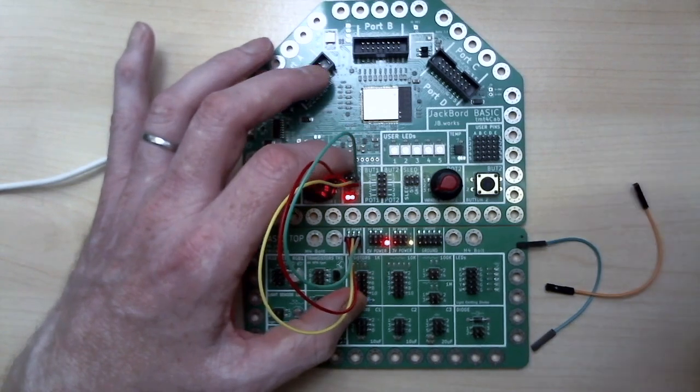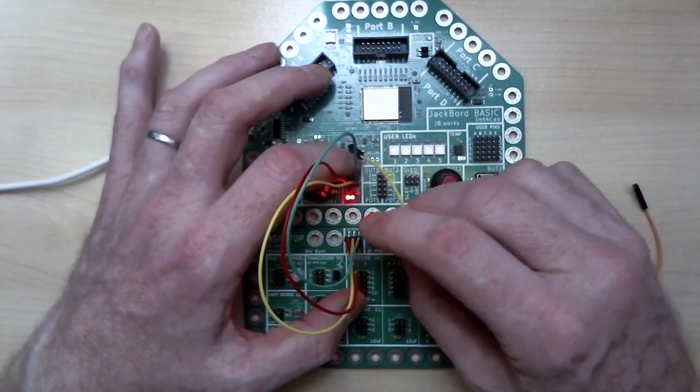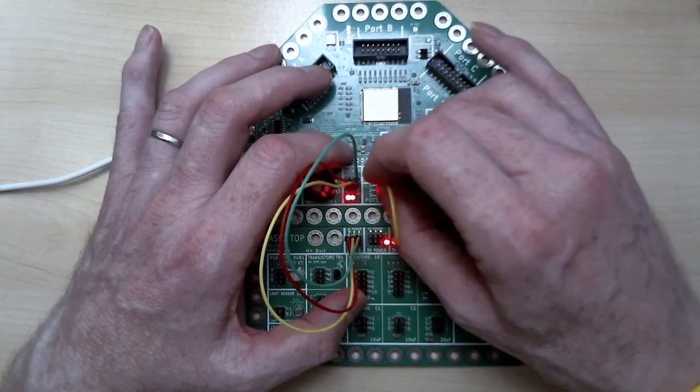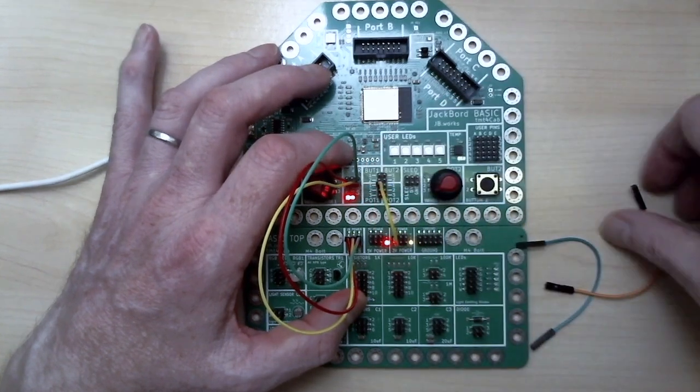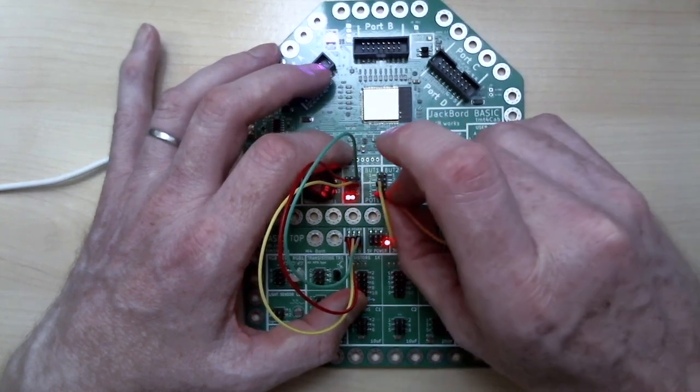So the first thing we need to do is get some power going from three volts to pin one of pot one that's this one here and then we're going to go from pin two of pot one to the red LED pin.